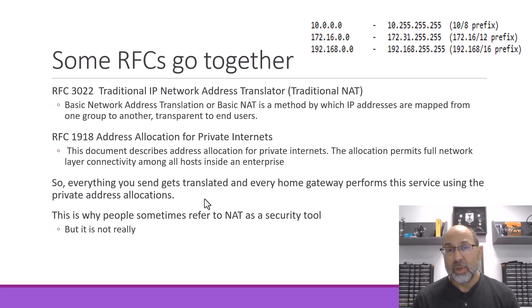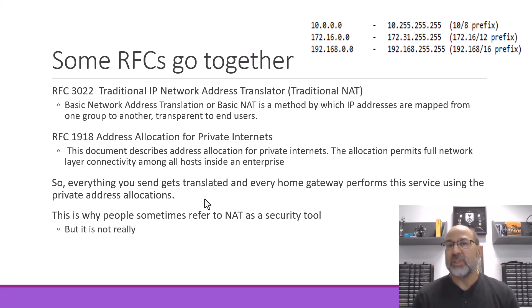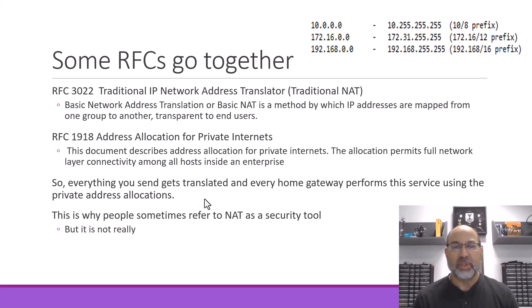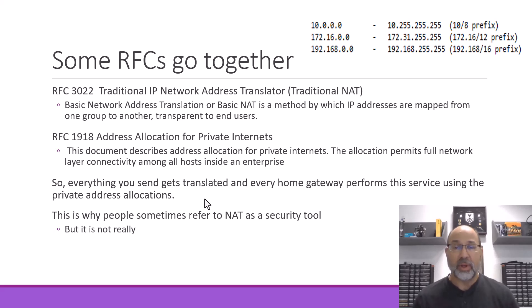The thing that goes along with this is RFC 1918, which defines these addresses for us. RFC 1918 is the address allocation for private internets. This document describes address allocation for private internets — this is what your home network is. The allocation permits full network layer connectivity among all hosts inside an enterprise.